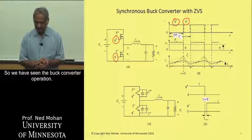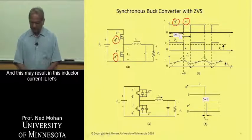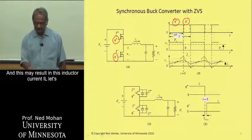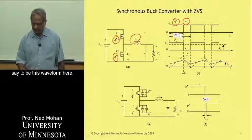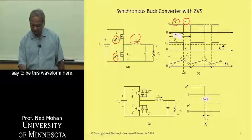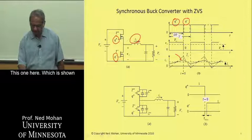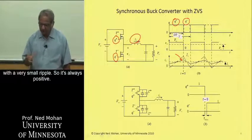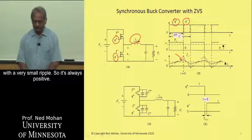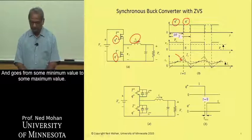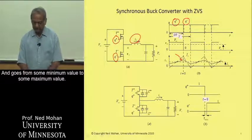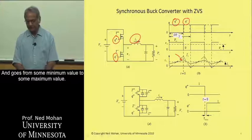So we have seen the buck converter operation, and this may result in this inductor current IL to be, let's say, of this waveform here, which is shown with a very small ripple, so it is always positive and goes from some minimum value to some maximum value.